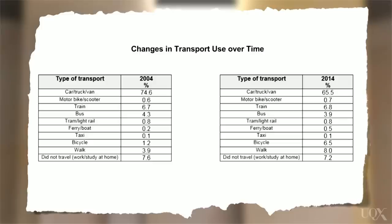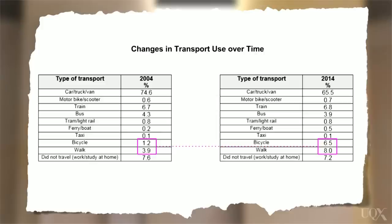Let's look at the data. For 2004, cars, trucks, or vans are by far the most popular means of transport. In 2014, they were still the most popular, although their use decreased slightly. Another key feature is a change in the popularity of cycling and walking over the 10-year period. Whereas the use of cars, trucks, and vans declined, the percentage of people riding a bicycle or walking has gone up — a significant change worth noting. Remember, we should not comment on the reasons why this change occurred, as no such data is given in the table.